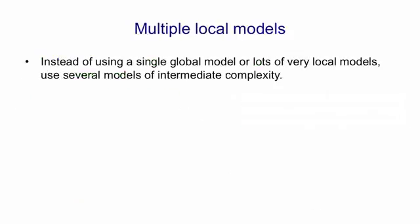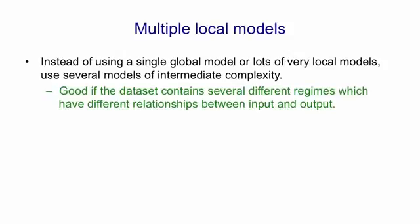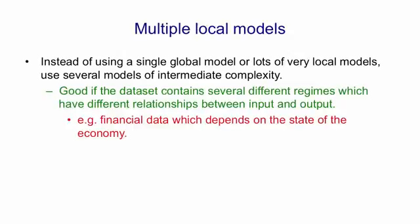In between these two ends of the spectrum, we have multiple local models that are of intermediate complexity. This is good if the data set contains several different regimes, and those different regimes have different input-output relationships. In financial data, for example, the state of the economy has a big effect on determining the mappings between inputs and outputs, and you might want to have different models for different states of the economy. But you might not know in advance how to decide what constitutes different states of the economy. You're going to have to learn that too.